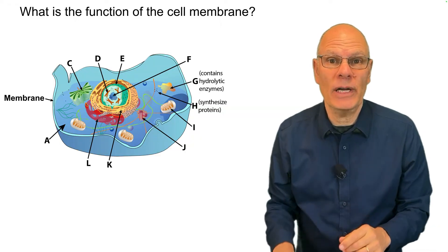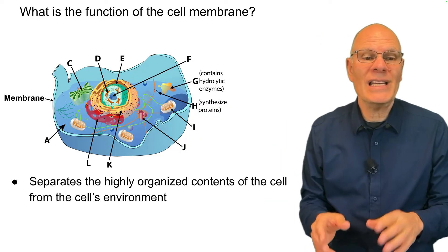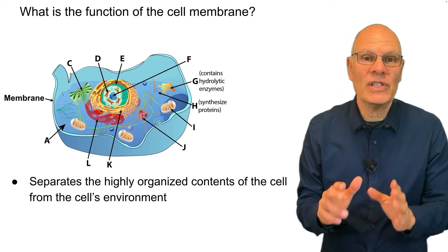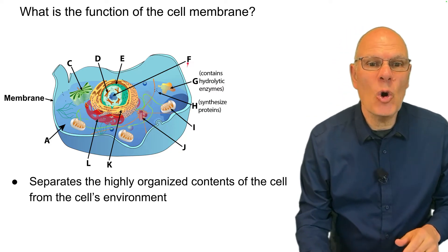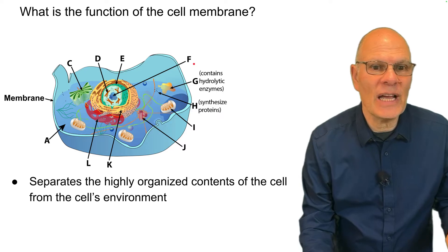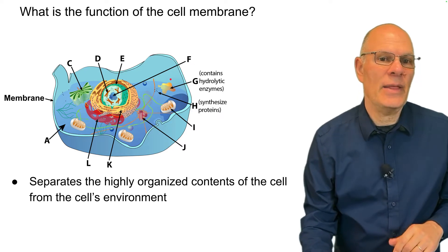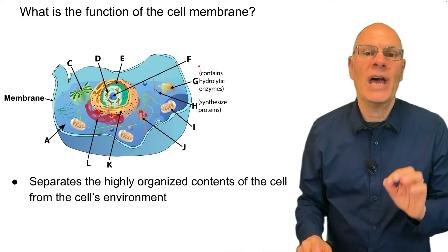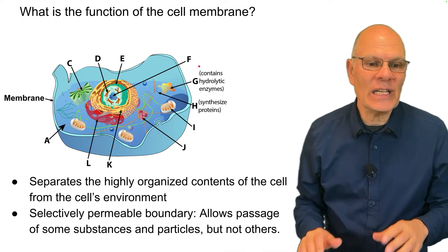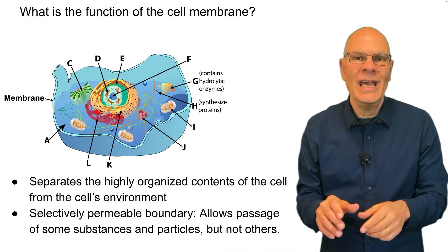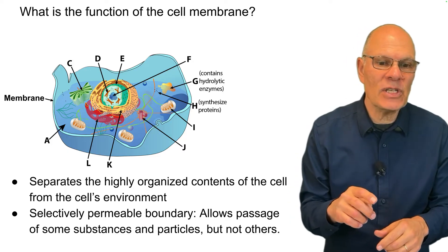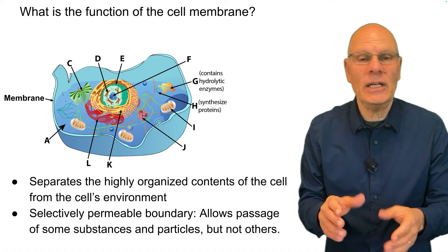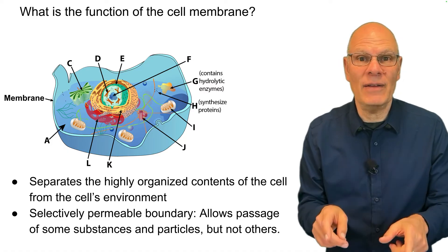What is the function of the cell membrane? The cell membrane separates the highly organized contents of the cell from the cell's environment. Cells are open systems — they need to let things like food in and wastes out, and the membrane is how that's controlled. That's because the membrane is a selectively permeable boundary: it allows the passage of some substances and particles through, but not others. That selectivity is really the key to life.